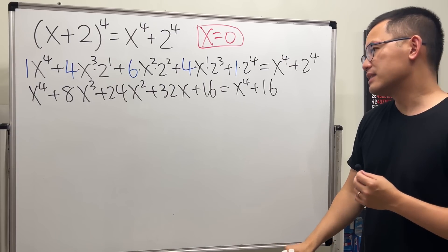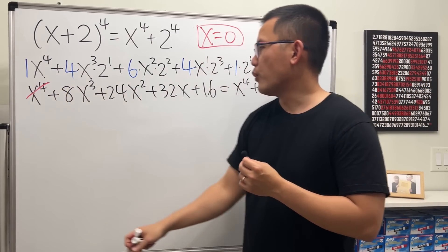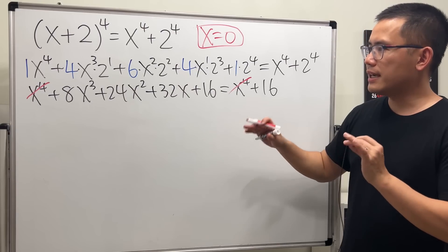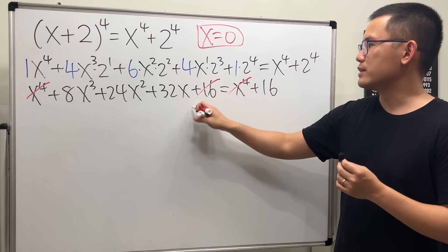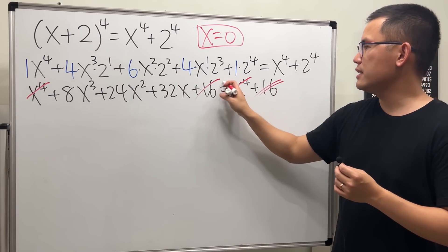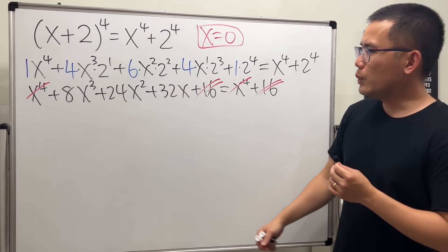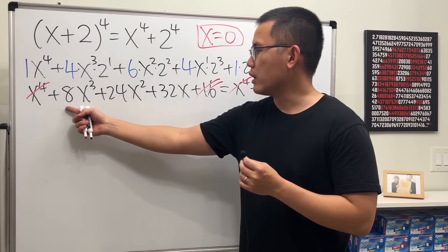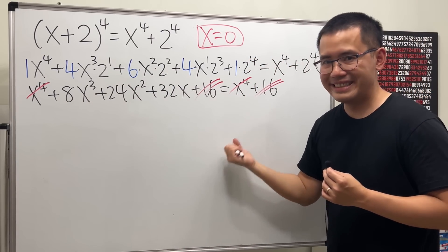As we can see, x to the fourth appears on both sides, so they cancel. Likewise, we can cancel the 16 on both sides, so we're just looking at 8x cubed plus 24x squared plus 32x equal to zero.